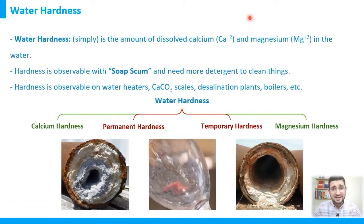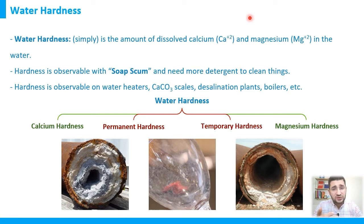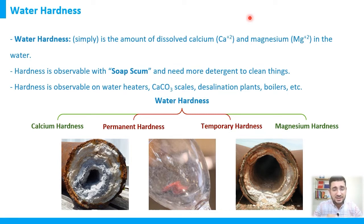Let's elaborate on the topic of water hardness. The definition of water hardness is the amount of dissolved calcium and magnesium ions in water. For scientists, we can also include strontium and barium within the ions that represent hardness, especially when they are present at high levels.